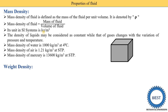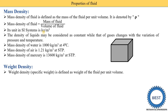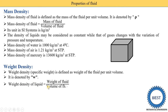The second term is weight density, also called specific weight. The difference from mass density is that we simply replace the word 'mass' with 'weight' in the definition. Weight density is defined as the weight of the fluid per unit volume, and it is denoted by the symbol w.